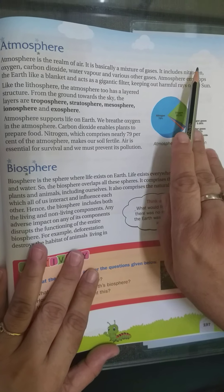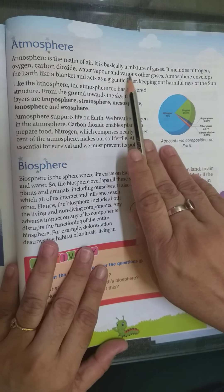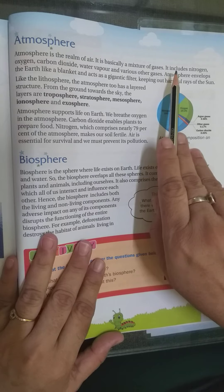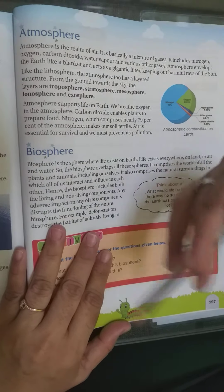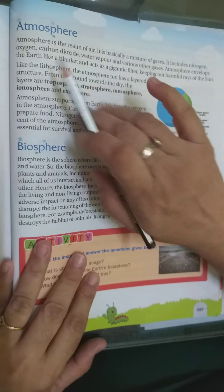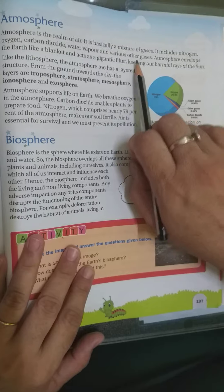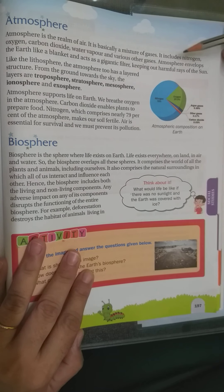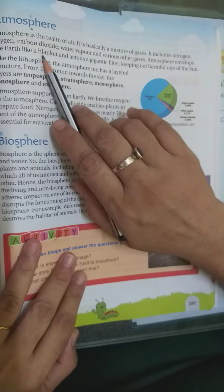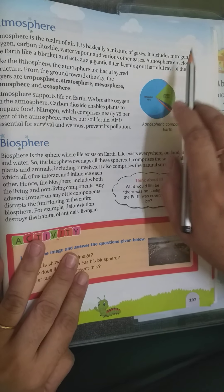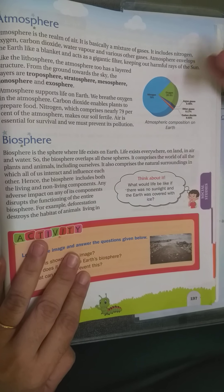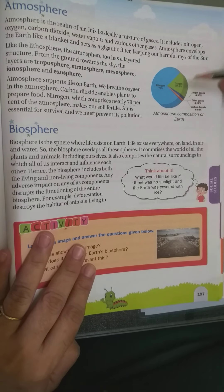The atmosphere includes nitrogen, oxygen, carbon dioxide, water vapor, and various other gases. The atmosphere envelops the earth like a blanket and acts as a genetic filter, keeping out harmful rays of the sun. Because of these gases, harmful rays from the sun do not come near us.